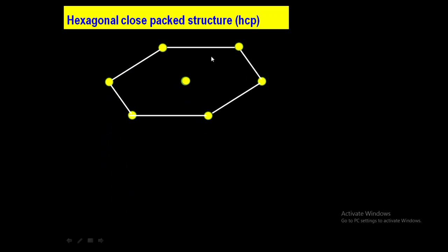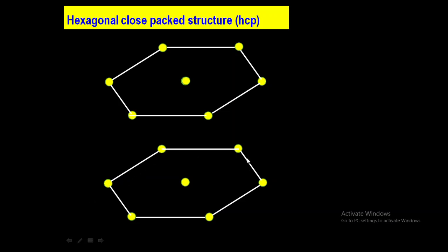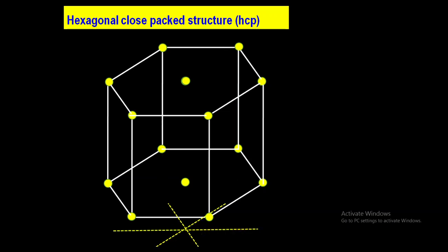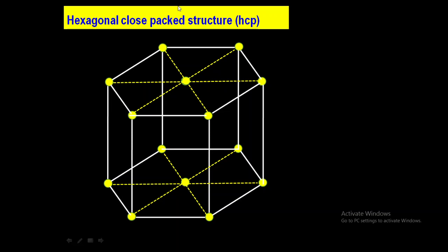How do we construct a hexagonal close-packed structure? First, we construct a top hexagonal layer which consists of 6 sides having 6 atoms at the corners and 1 at the centre. Next, we construct a bottom hexagonal layer also consisting of 6 atoms at the corners and 1 at the centre. We then join the top and bottom layers by vertical lines to get the hexagonal unit cell. Both top and bottom hexagonal layers each consist of 7 atoms.